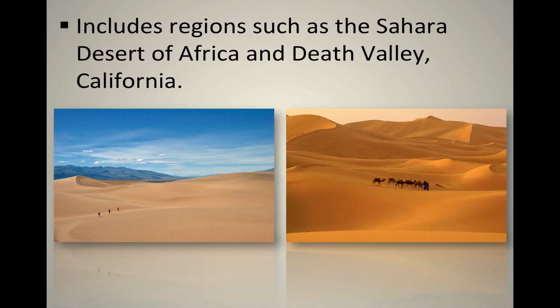Arid climate regions include the Sahara Desert of Africa and Death Valley, California. Here in the United States — I broadcast straight out of Little Rock, Arkansas — we do have a vast desert called Death Valley. The city is actually named Death Valley, California, right on the border of California and Nevada, at the southern tip of California.